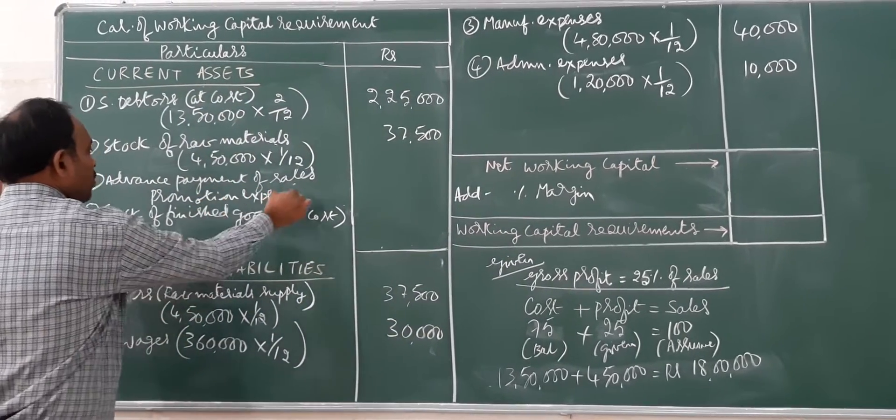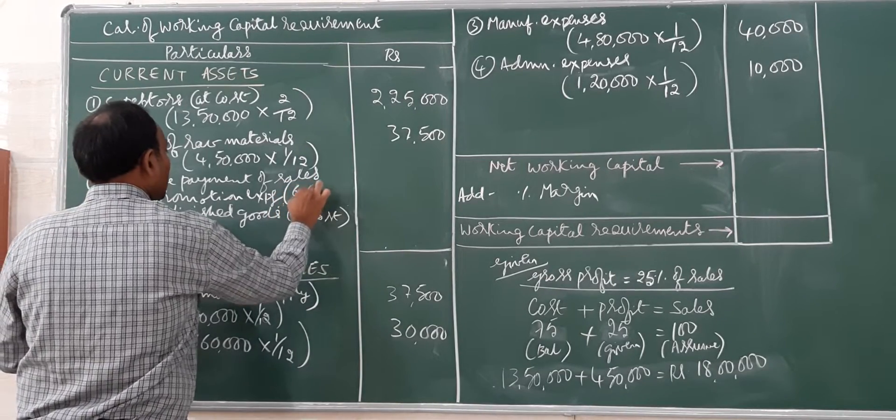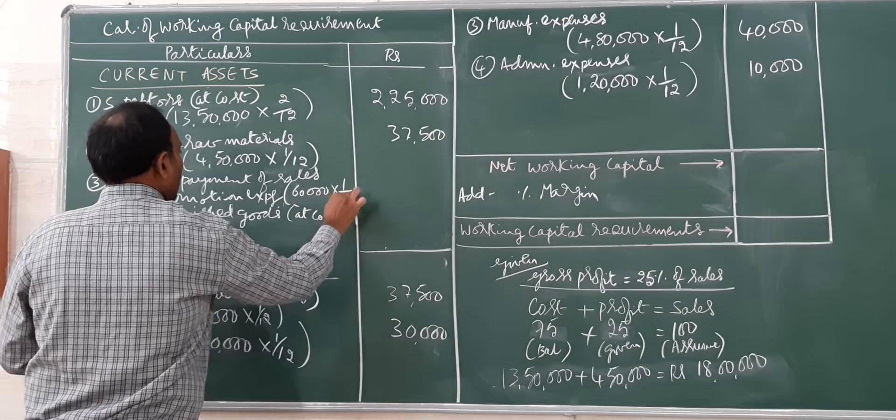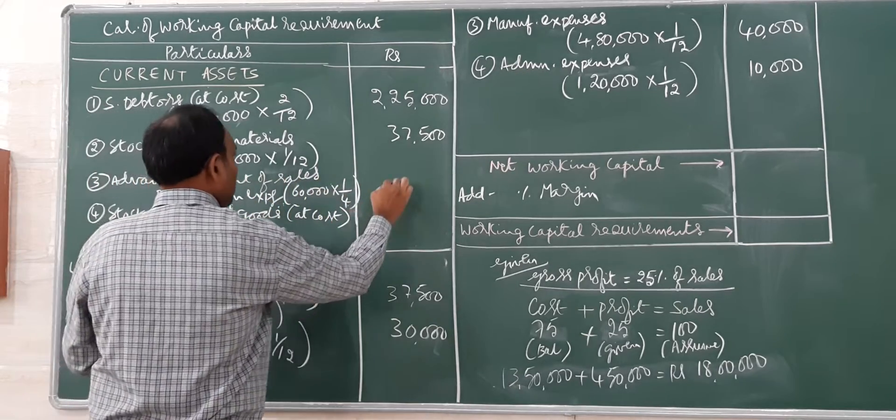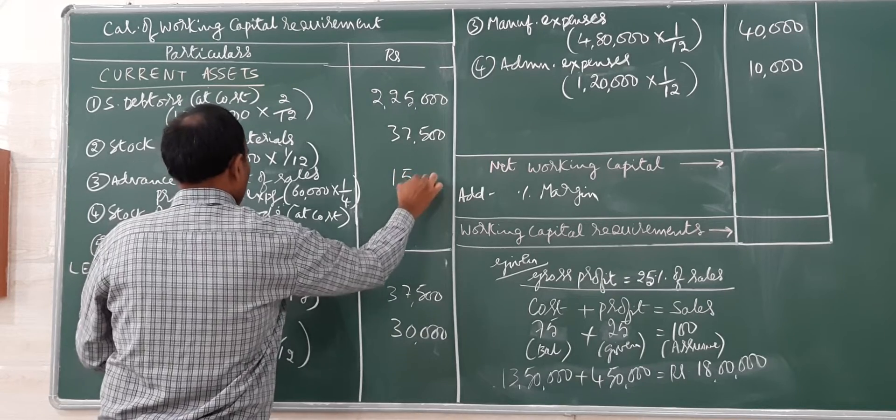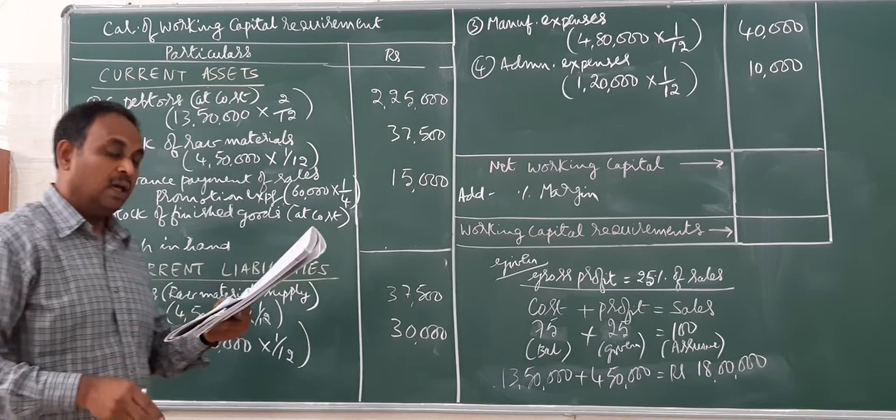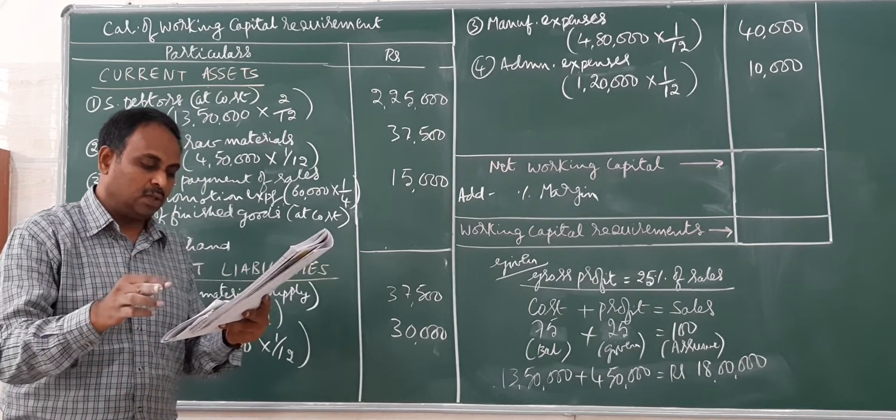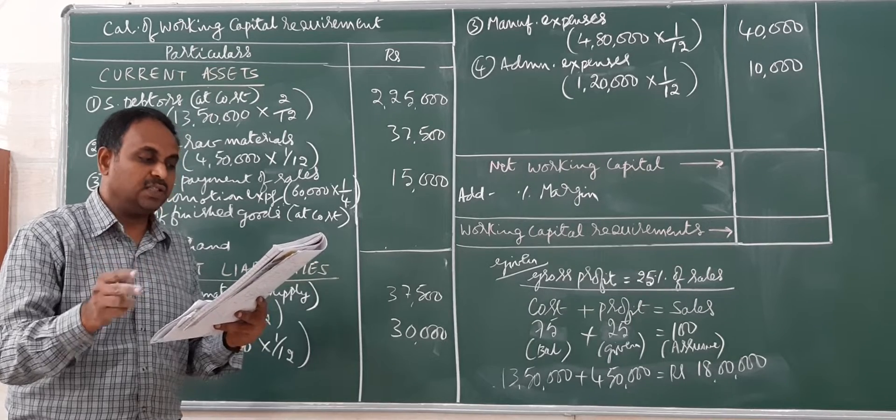Advance payment of sales promotion expenses paid quarterly in advance. There are 4 quarters in a year, so 1 by 4 (not half yearly), which equals 15,000. Income tax is payable in 4 installments, but one lies in next year, so nothing to do with this.